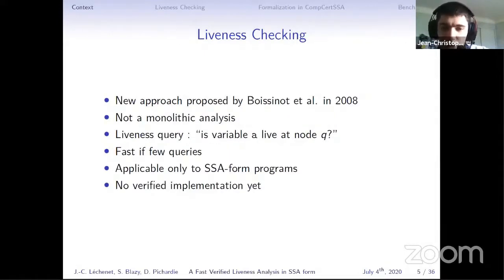But in 2008, a new approach was proposed by Boissinot et al. that they called liveness checking. This is quite different from a standard liveness analysis. In particular, it is not a monolithic analysis computing the liveness everywhere at once. Instead, it allows to answer so-called liveness queries of the form is a given variable live at a given point. It is claimed to be fast if the number of queries is low. And its particularity is it's applicable only to SSA form programs. And it has not been integrated yet in a verified compiler.